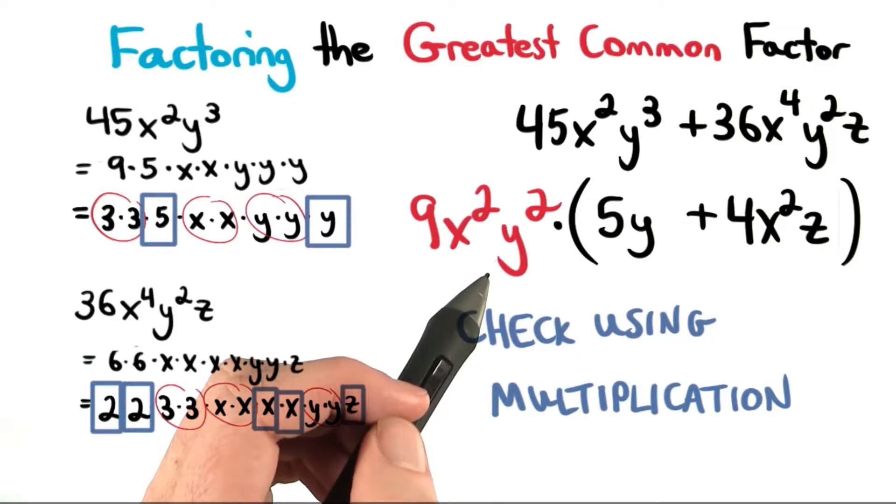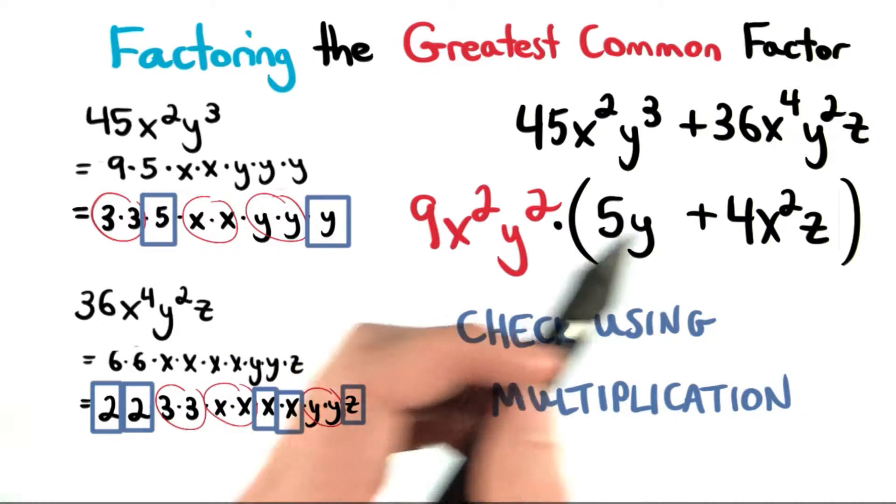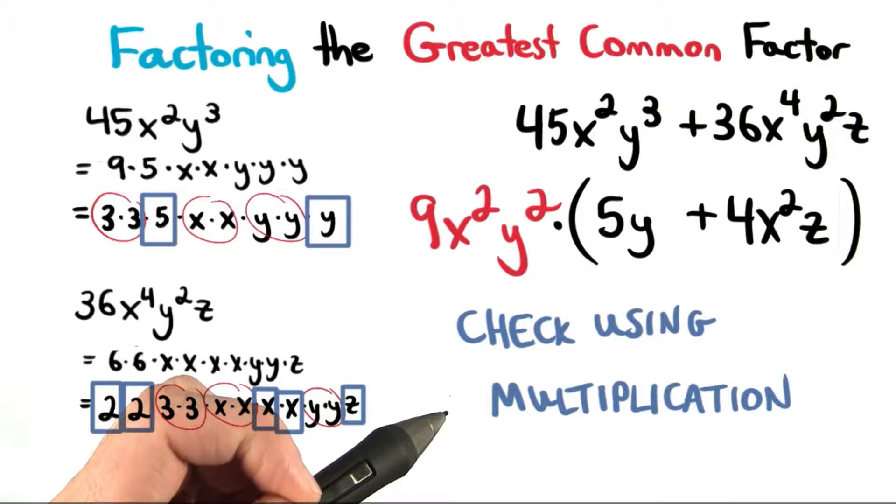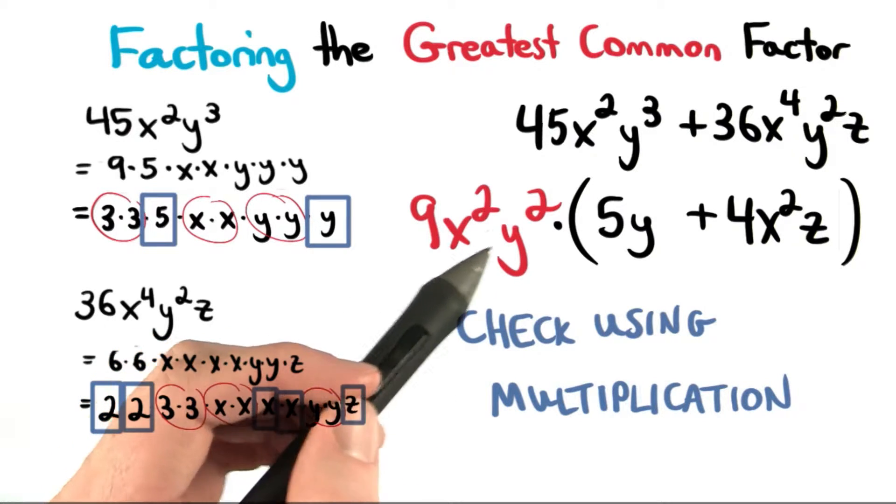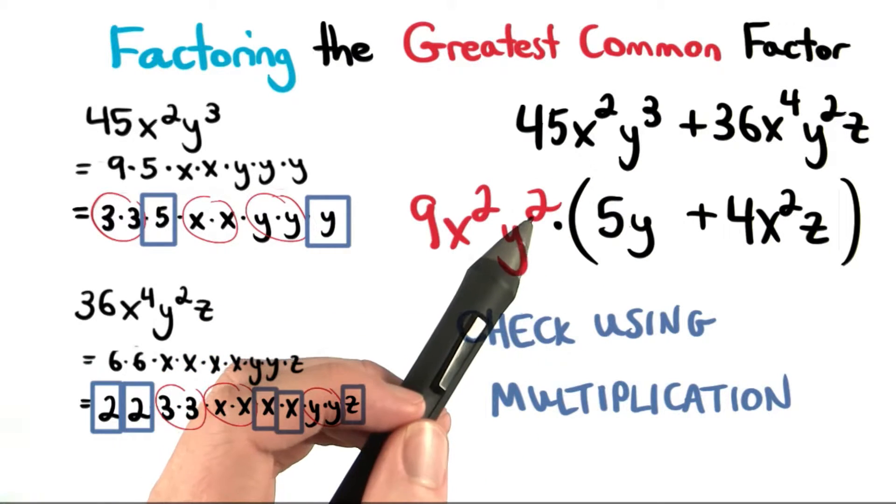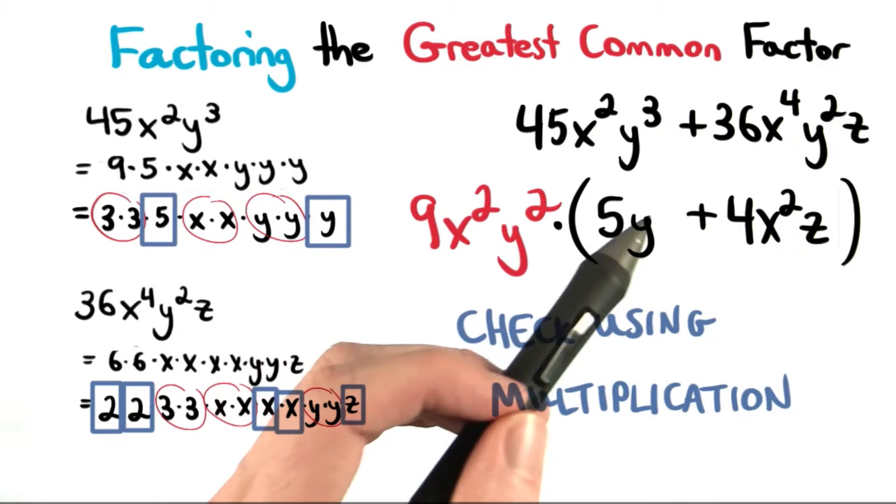If I multiply 9x squared y squared by 5y and by 4x squared z, I should wind up with my original statement. This is where the properties of exponents come in handy. 9x squared y squared times 5y would be 45x squared y cubed. We add the exponents here. There's a 2 and a 1.